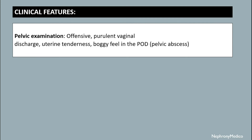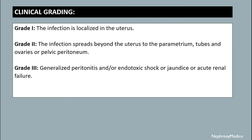Pelvic examination reveals offensive fluid and vaginal discharge with uterine tenderness and a boggy feel in the pouch of Douglas. The clinical grading includes Grade 1, Grade 2, and Grade 3. In Grade 1, the infection is localized in the uterus. In Grade 2, the infection has spread beyond the uterus to the parametrium, tubes, ovaries, or pelvic peritoneum. In Grade 3, generalized peritonitis and/or endotoxic shock or renal failure is present.